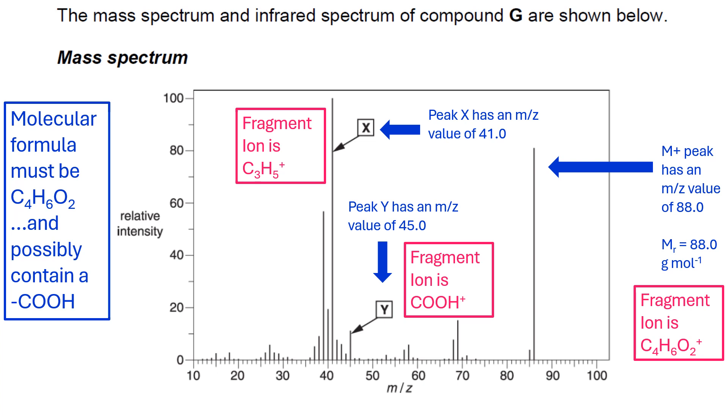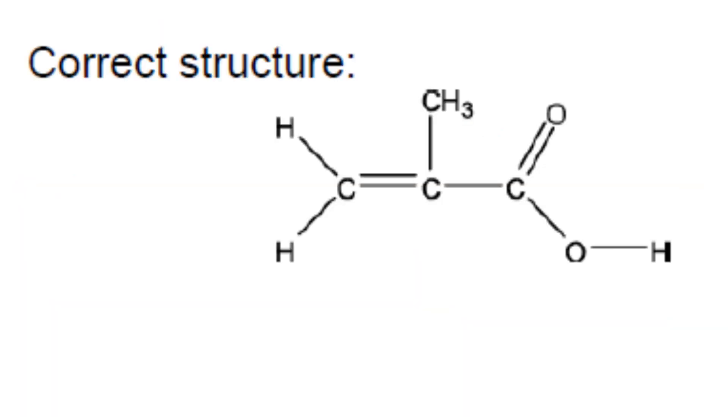Finally, what we need to do is bring that all together to give a structure. Our C3H5 is one, two, three carbons and one, two, three, four, five hydrogens, and then our COOH that we agreed on is over here.